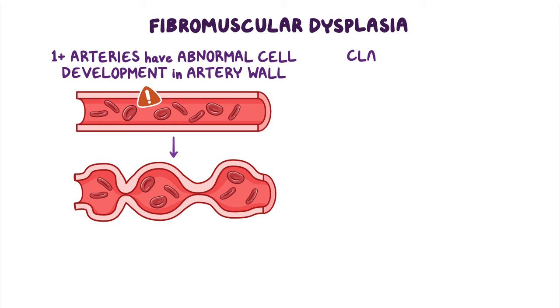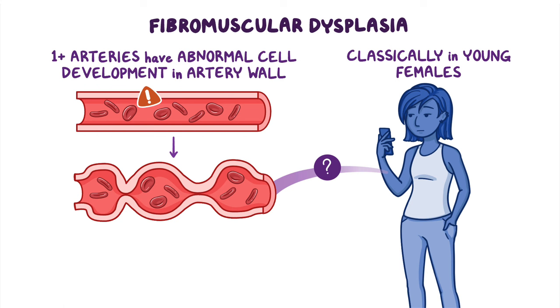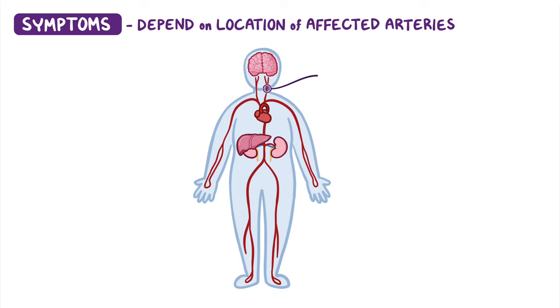Fibromuscular dysplasia classically develops in young females, but the exact underlying cause is still unclear. Symptoms of fibromuscular dysplasia vary widely and depend on the location of the affected arteries.